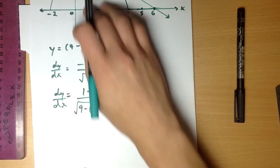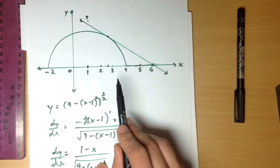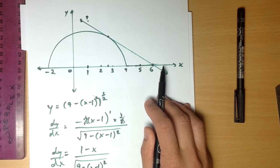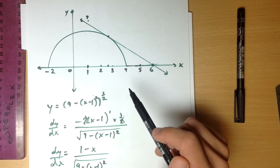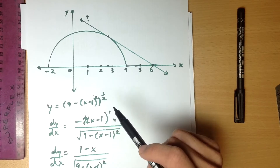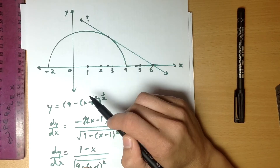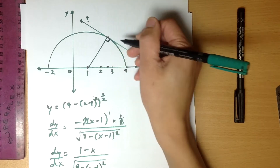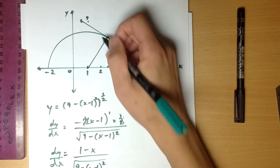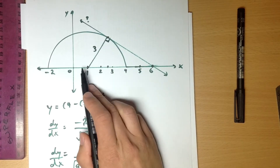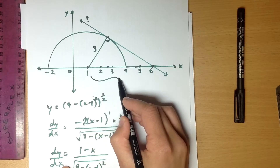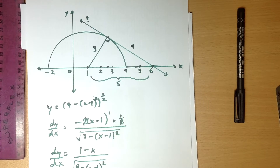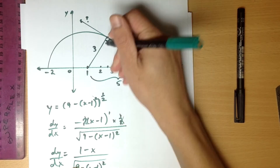Now if I can find the actual x-value of the point of tangency, I just substitute it in and I'll know the gradient at that point. Once I know the gradient, the tangent has the same gradient. To work out the x-coordinate, I'll use a bit of geometry. From the center of the circle up to the tangent point, the tangent is perpendicular to the radius at the point of contact — so there's a right angle there. The radius is 3, and the distance from center (1, 0) to (6, 0) is 5 units. Because it's a right-angle triangle, that means I've got a 3-4-5 triangle.